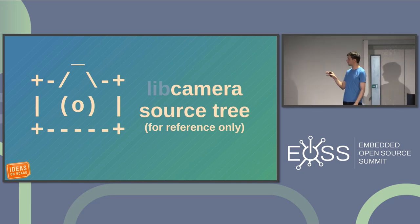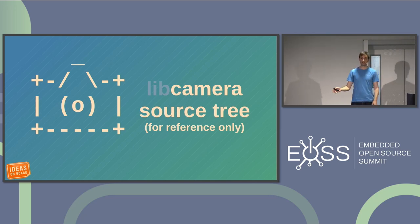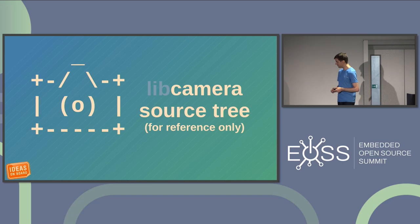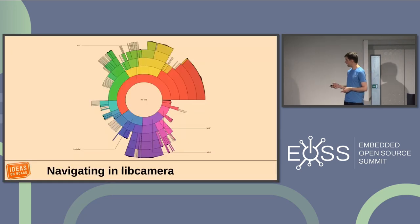How do you add support for a new platform? I have bad news for you: you're going to have to write code. Hopefully there are a few people in this room who don't mind that. So how does it look? Where do you find the code? What does the source tree look like?